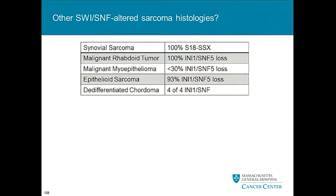Finally, I wanted to touch on the fact that while all synovial sarcomas have the SS18-SSX fusion protein and all malignant rhabdoid tumors have SNF5 loss, there are other sarcomas with loss of SNF5 — also called INI1. We think it's around 20 to 30% of myoepithelial carcinomas. Epithelial sarcoma has it in almost all cases, as do some de-differentiated chordomas, and there's a recent case report of an MPNST patient with loss of this as well. Will the same biology apply to these other tumor types? Hard to know — we'll find out.